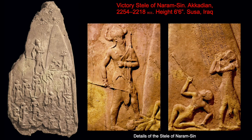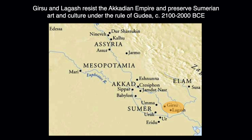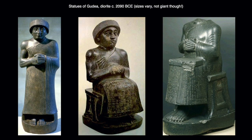After Naram-Sin, the Akkadian empire fell apart due to pressures from surrounding areas, including the Guti, a hill people from the northeast who conquered the empire. A few city-states had held out from the Akkadians — Gursu and Lagash. In Lagash, a ruler named Gudea left an extensive legacy of temples and votive statues with inscriptions, made from the extremely hard stone diorite. A video about Gudea with much more information has been provided.